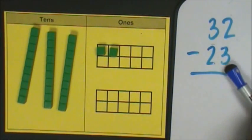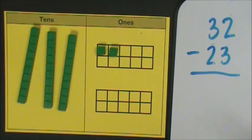I'm going to subtract twenty-three from thirty-two. First I will represent thirty-two.